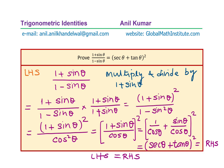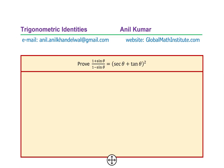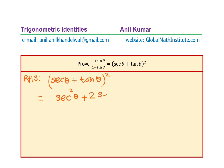You could have started from the right hand side also. So let's see what happens if we start with the right hand side. This time I will prove the same identity starting with the right hand side, which is secant theta plus tan theta whole square. We can expand this as secant squared theta plus 2 secant theta tan theta plus tan squared theta.